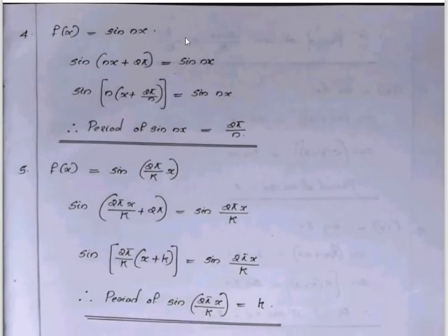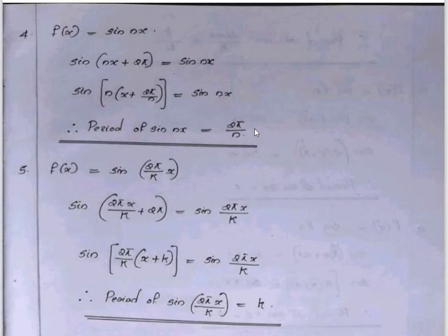For f of x equals sin nx: sin n(x plus b) equals sin nx implies n times b equals 2π, so the period is 2π divided by n. That is the fundamental period.